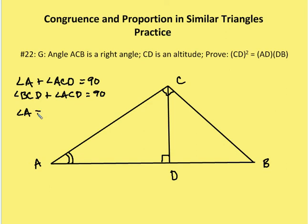So angle A is congruent to angle BCD. Now I have two triangles that are going to be similar: triangle ACD is similar to triangle CDB by the angle-angle similarity theorem.